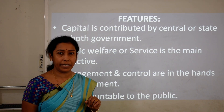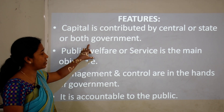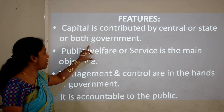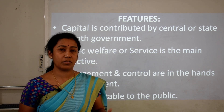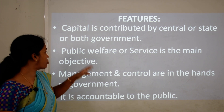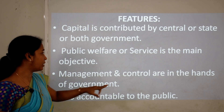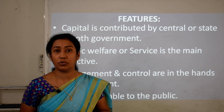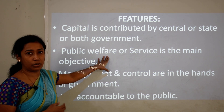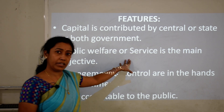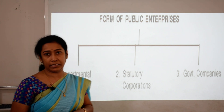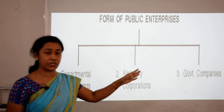Features of public sector enterprises: First, capital is contributed by central or state government or both. Second, the main objective is public welfare or social service. Third, management and control are in the hands of the government, and they are accountable to the public. There are three forms: departmental undertaking, statutory corporation, and government companies.